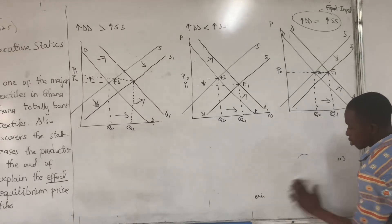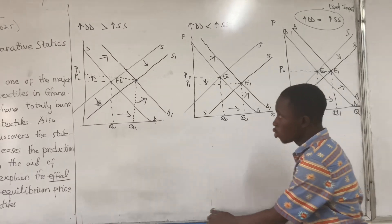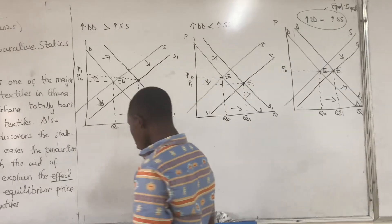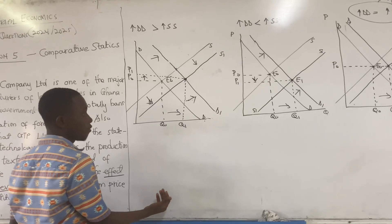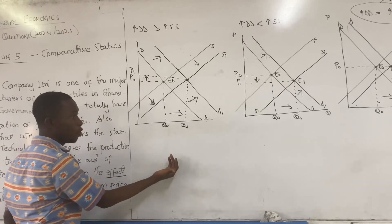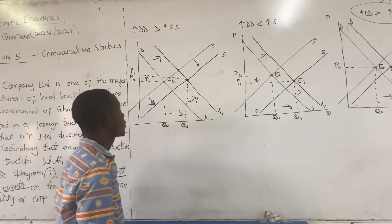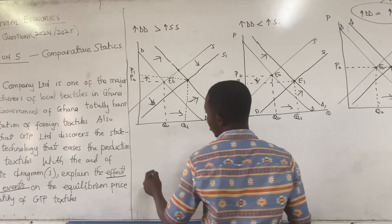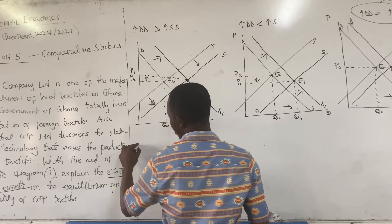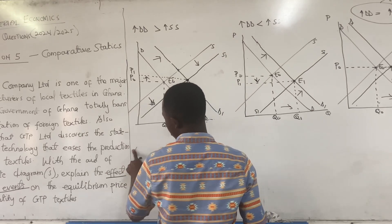So that is how we solve the B part of the question. Let me explain something here. Per what we have here, you just give a brief interpretation to each diagram. So for instance, with the first one — an increase in demand...